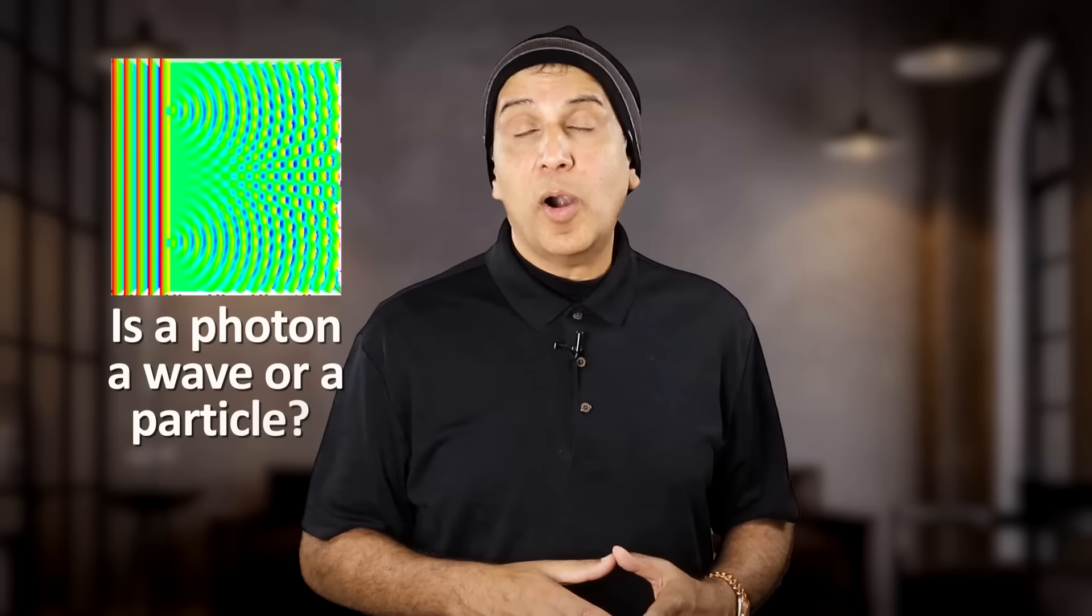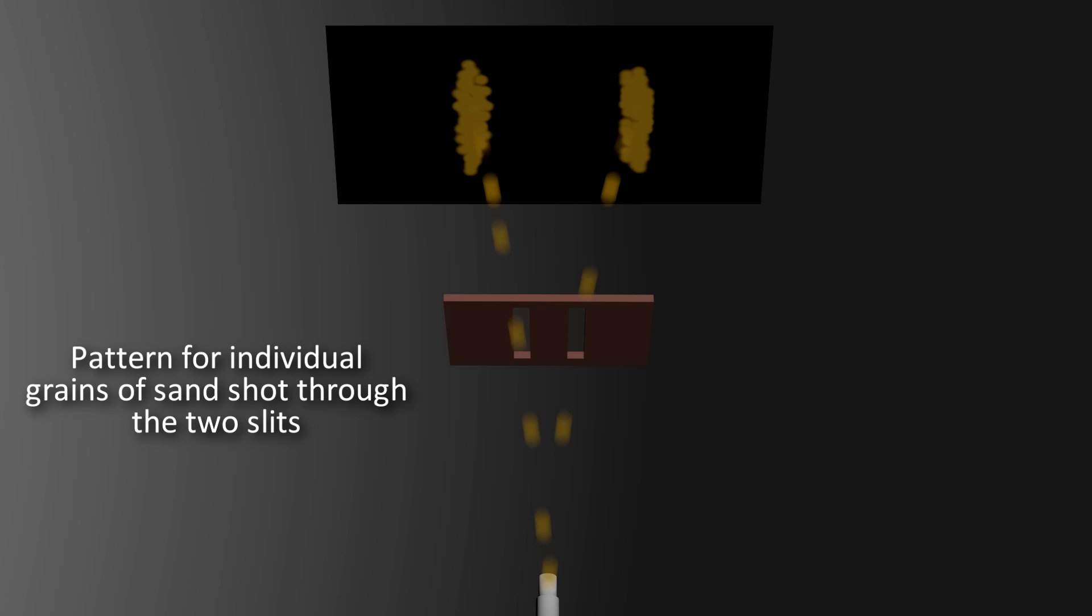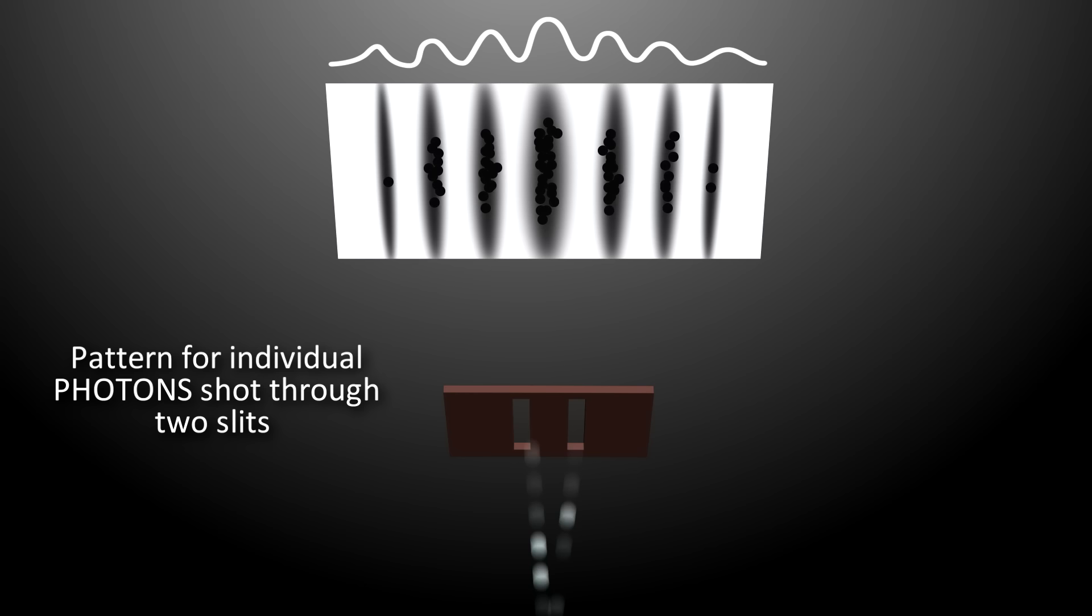But from Planck and Einstein, we learned that light comes in discrete packets of energy called a photon. So is a photon a wave or a particle? Scientists tried to figure this out by shooting one photon at a time through the two slits. If it was a particle like a grain of sand, we would expect it to go through one slit or the other and make a spot either behind the first or second slit. But this is not quite what happened. The photon seems to randomly make a spot somewhere on the screen. And if we shoot many thousands of photons one at a time, we see that as a whole, the photons make an interference pattern.